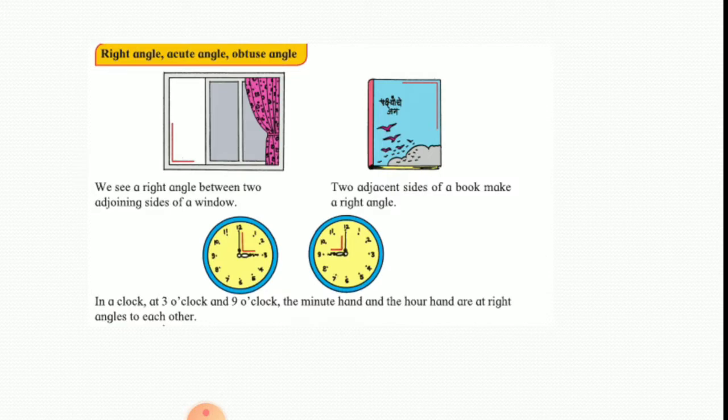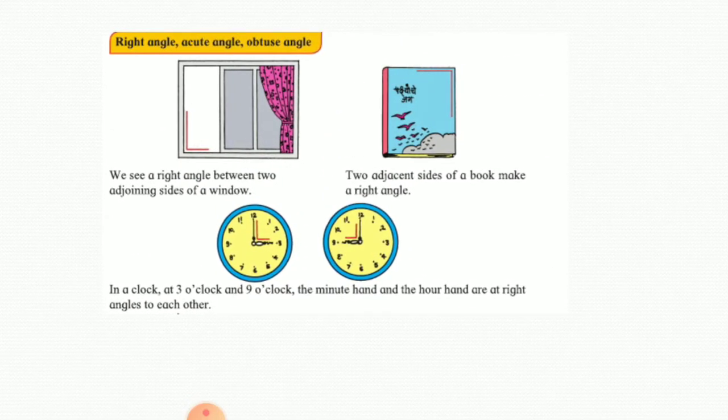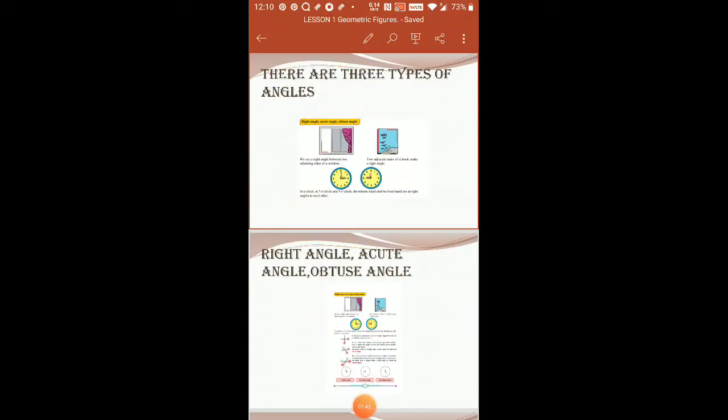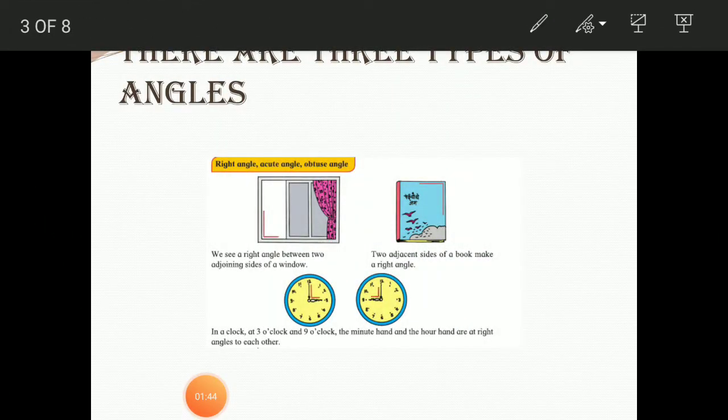They meet in the shape of alphabet L and they are at 90 degrees, so this angle is known as right angle. Now we'll move on to another angle.